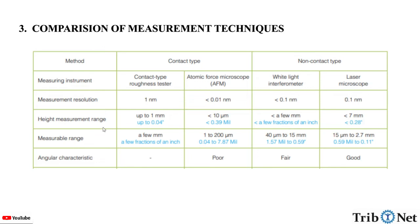Measurable range is a few millimeters for stylus measurement, 1 to 200 micrometers for AFM, 40 micrometers to 15 millimeters for optical interferometer, and 15 micrometers to 2.7 millimeters for laser microscope.